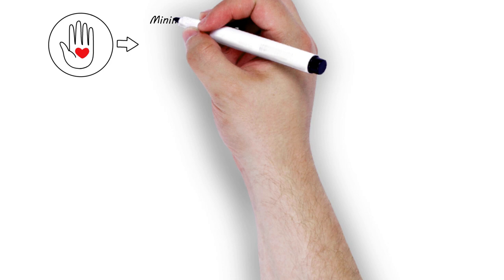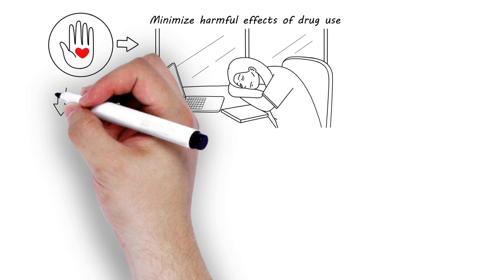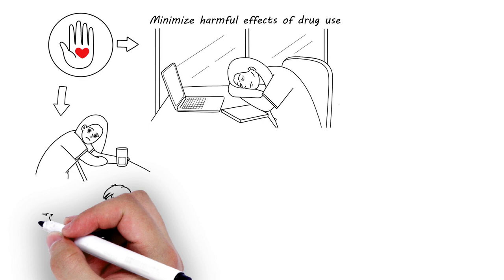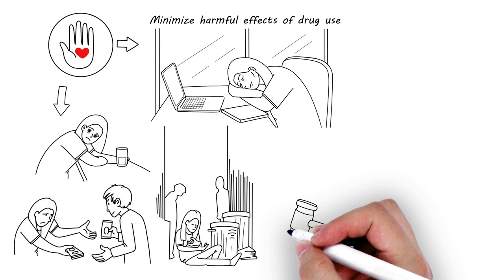Harm reduction intentionally works to minimize the harmful effects of drug use, rather than simply ignoring or condemning them. It recognizes that many factors contribute to drug-related risks, such as people's behavior and choices, the environment in which they use drugs, and the laws and policies designed to control drug use.